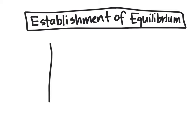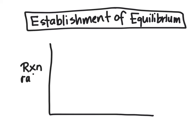We can look at a similar phenomenon with reaction rates. On our y-axis now will be the rate of reaction versus time. In red we will have our forward reaction and in blue we will have our reverse reaction. At the beginning of a reaction, the reaction rate for our forward reaction will be high because there's a lot of reactants that are going to be able to collide and produce products. The reaction rate for our reverse reaction will be low because there are no products around to cause that reaction to go.